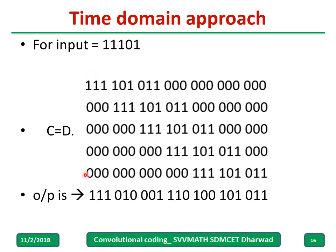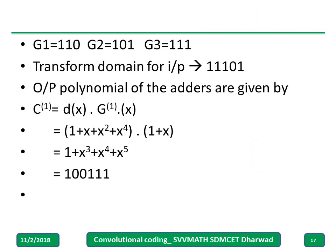For the transform domain in this example, write g1, g2, g3 in polynomial form. Compute c1, c2, c3 each by multiplying d of x with the corresponding generator polynomial. Write each result in polynomial form and then in terms of zeros and ones.